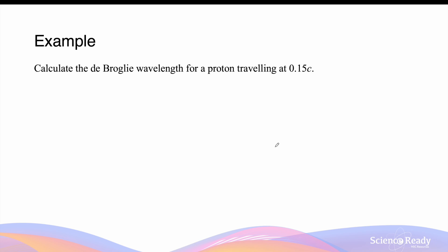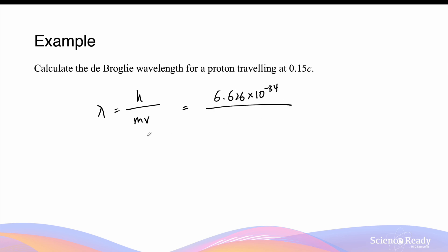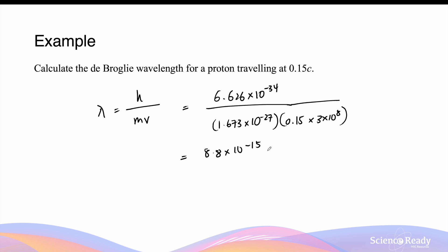Let's look at how we can use de Broglie's matter-wave equation. Calculate the de Broglie wavelength for a proton travelling at 0.15c. De Broglie wavelength equals Planck's constant divided by the momentum of the proton: 6.626 times 10 to the minus 34, divided by the mass of the proton (approximately 1.673 times 10 to the minus 27 kg) multiplied by the velocity 0.15c, which is 0.15 times 3 times 10 to the power of 8 m/s. This gives a wavelength of 8.8 times 10 to the power of minus 15 metres. This concludes the video on de Broglie matter-wave duality.